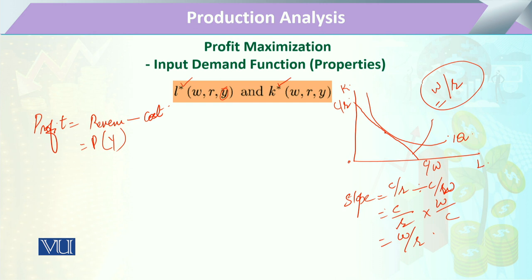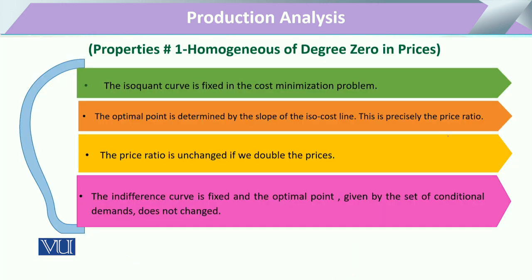Considering this tangency, we can derive the further input demand. At the optimal point, when we change prices — whether wages W or price of capital R — doubling or tripling them does not change the ratio, because the ratio of the iso-cost line remains the same. Therefore, the conditional demand function and the iso-point will not change. This means the homogeneity of degree zero property is fulfilled.